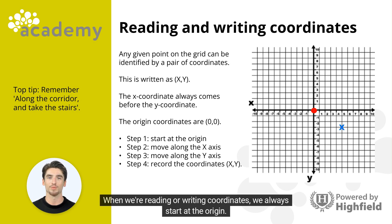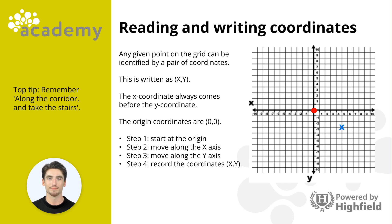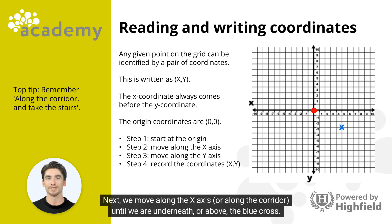When we're reading or writing coordinates, we always start at the origin. The origin coordinates are (0, 0). Next, we move along the x-axis, or along the corridor, until we are underneath or above the blue cross.